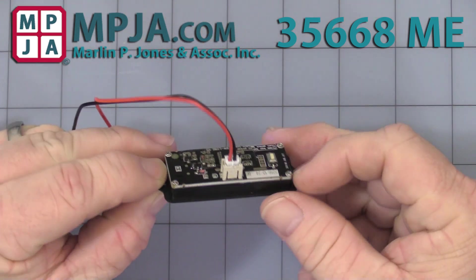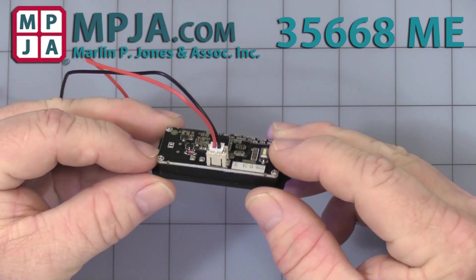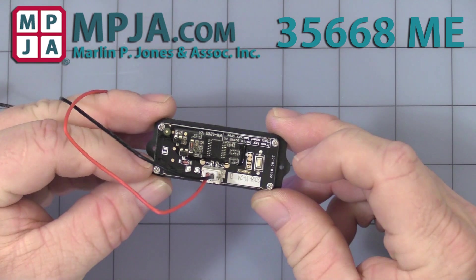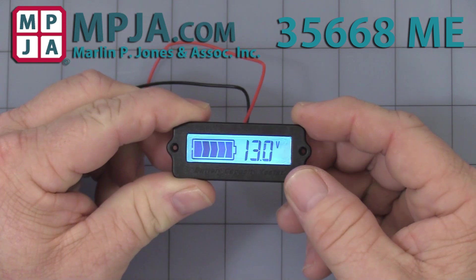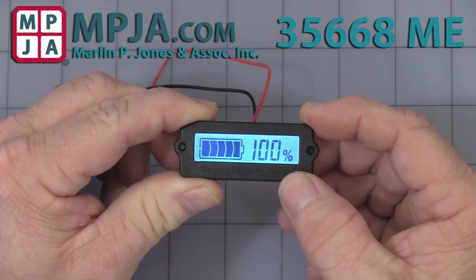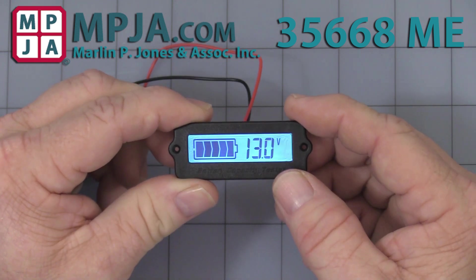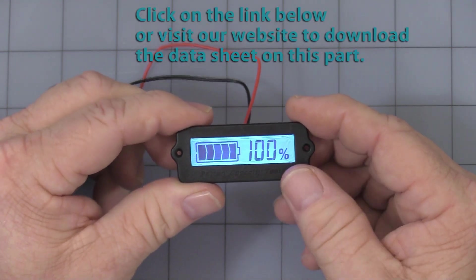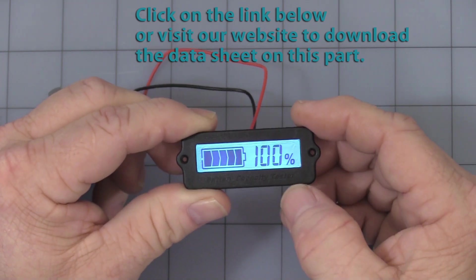First off, it is not waterproof as you can see. It has to be protected. All the programming is done through this one button on the back. When it's in operating mode, it merely switches between the voltage and the percent of the battery capacitance. It'd be nice if that button was on the front, but they put it on the back. So you get to choose between voltage or percentage in operating mode.